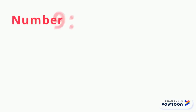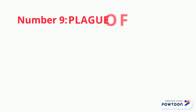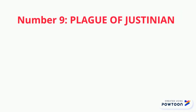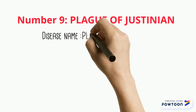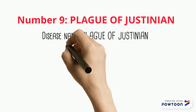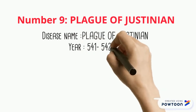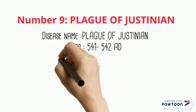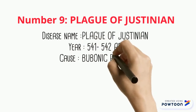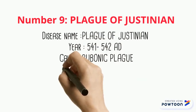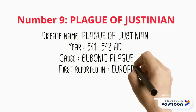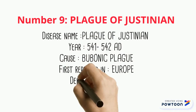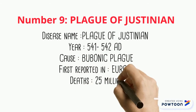Number 9 is the Plague of Justinian, an outbreak of the bubonic plague that killed half the population of Europe in 541 to 542 AD, killing up to 25 million people.